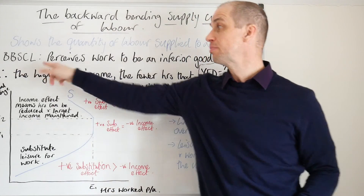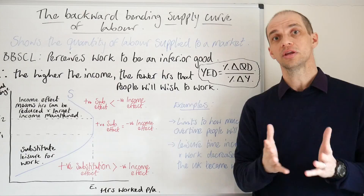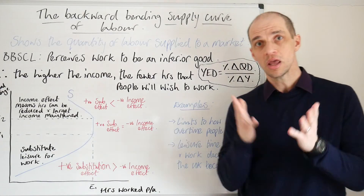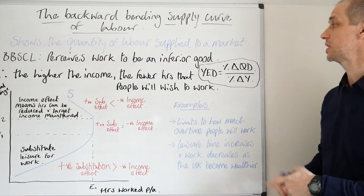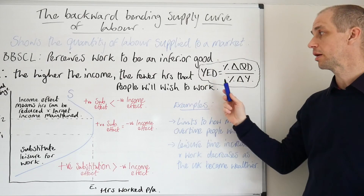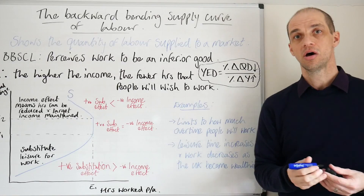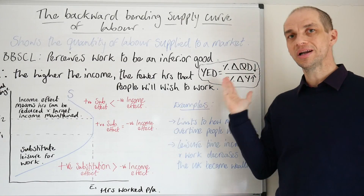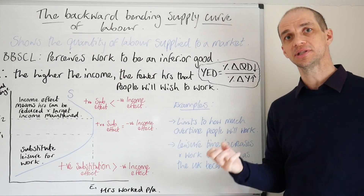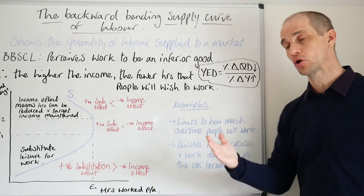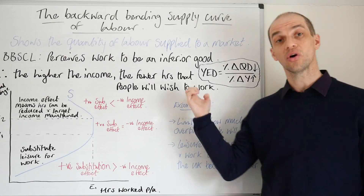The backward bending supply curve of labour perceives that work is an inferior good. If you think back to the work you've studied previously on income elasticity of demand, when it comes to an inferior good it has a negative income elasticity of demand. So as an example, if income rises then the quantity demanded of the good will actually fall. What we're dealing with here is a rise in income but considering how much appetite you have to actually undertake more work. That's a very important element within this backward bending supply curve.